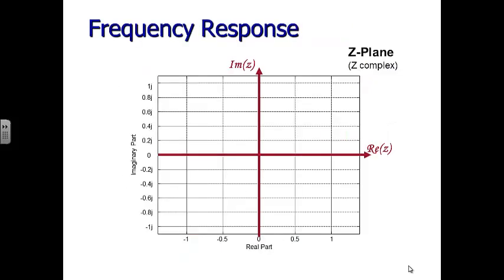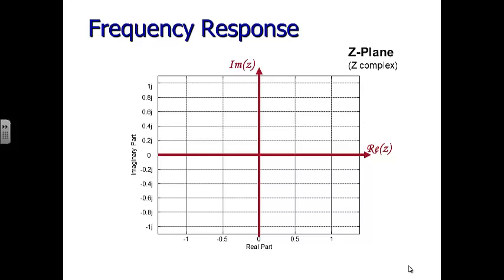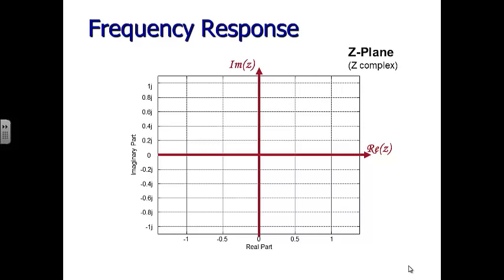So to solve a steady state problem, we can work with H of Z directly — we don't need to derive H of F separately. When we substitute Z = e^(j2πF), we're restricting ourselves to Z values of the form e^(j2πF), which have magnitude 1. That means we're operating on the unit circle. H of F is a particular subset of H of Z — it's H of Z evaluated only at Z values on the unit circle.